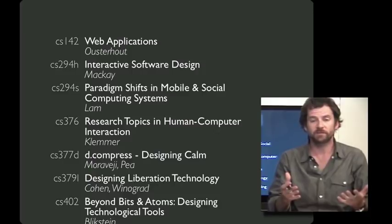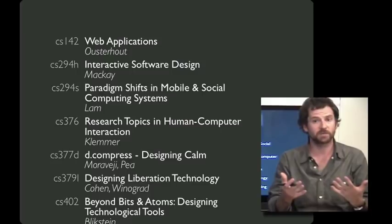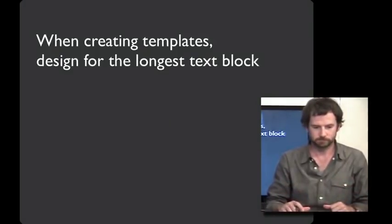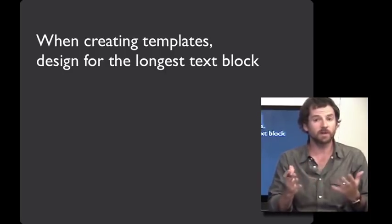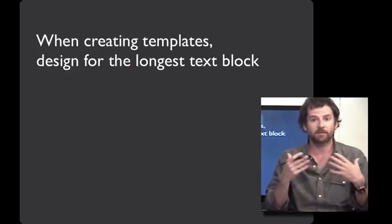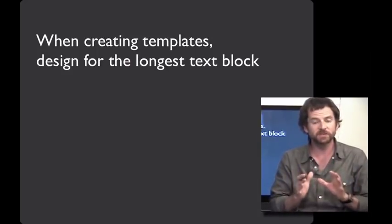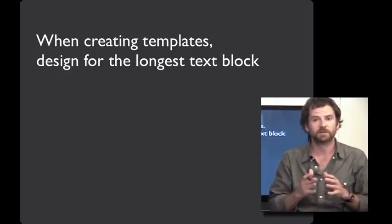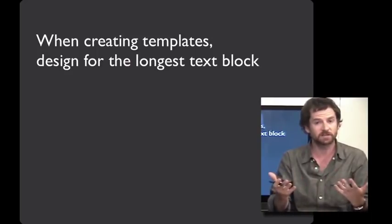Another thing that we might do if we really want to de-emphasize course numbers is scale back the gray value of that number to make them recede further. One quick tip is when you're creating systems like this, make sure to work with the longest block of text first. It can be easy to design for a short title and then have a grid or alignment system that breaks down when you get to something longer. This is especially true if you're designing for multiple different languages. For example, German text often consumes a lot more real estate than English or Spanish or French text does.